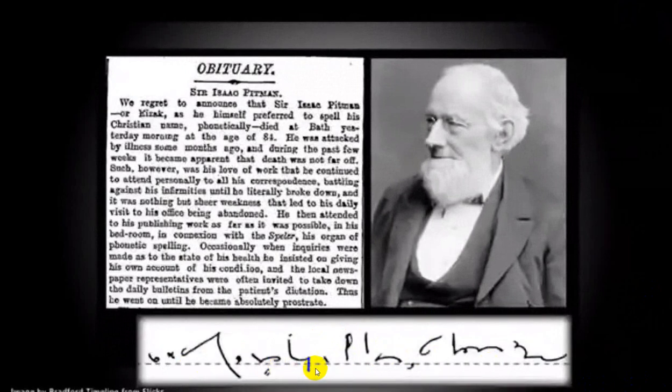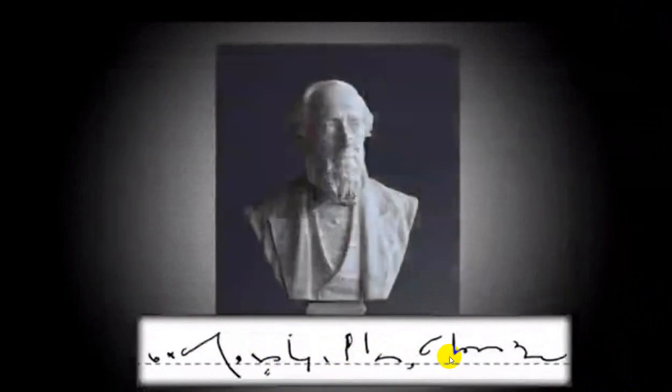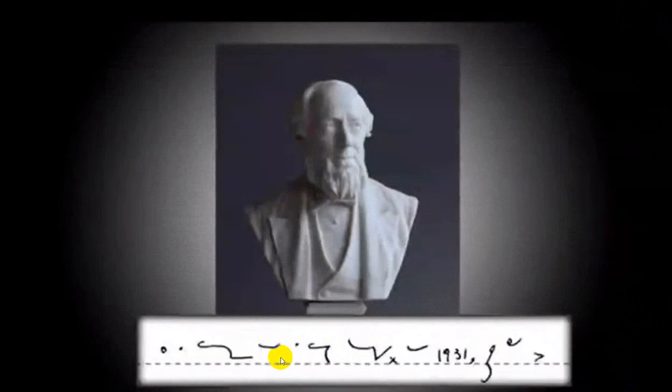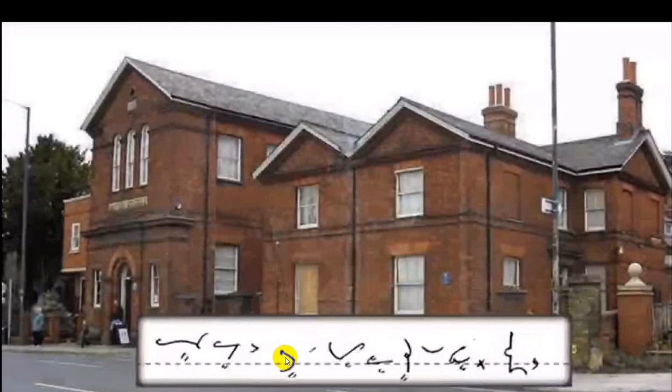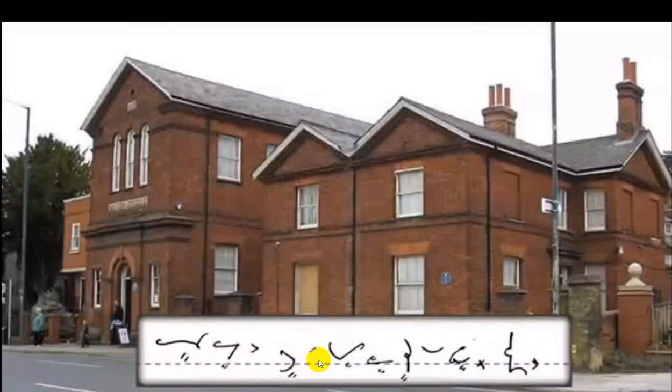Whereafter, Pitman continued to study at home while at the same time working as a clerk in a cloth factory. In 1831, he was sent to the Normal College of the British and Foreign School Society in London.